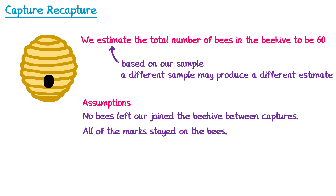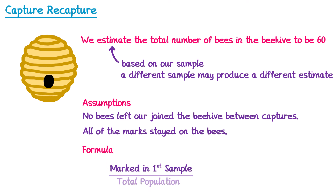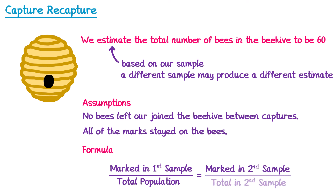The formula we use to answer this will be the same for all capture recapture questions: we take the number marked in the first sample and divide it by the total population — in our question that's what we called x — and we set this equal to the number marked in the second sample divided by the total in the second sample.